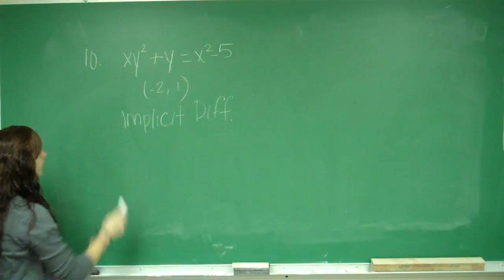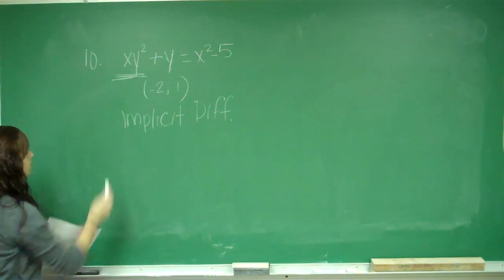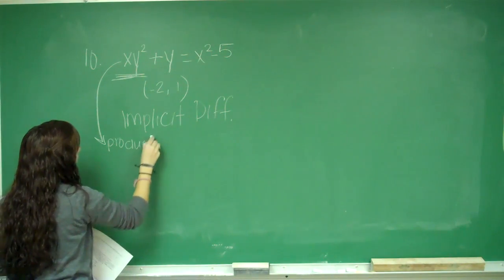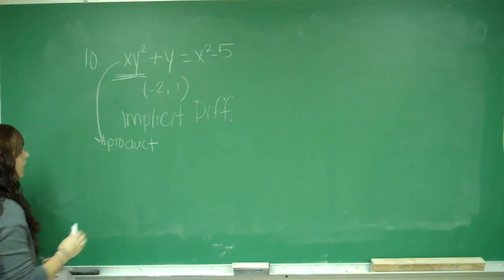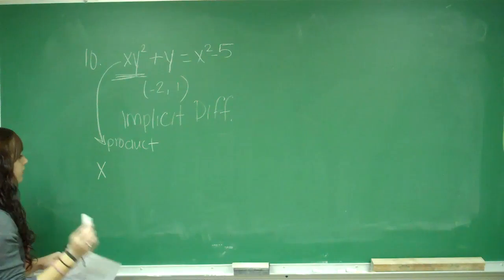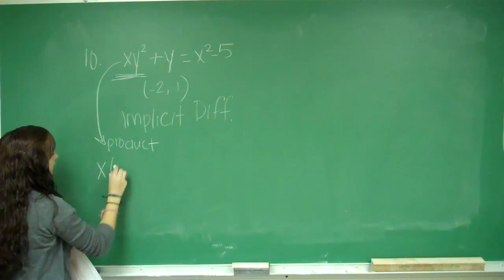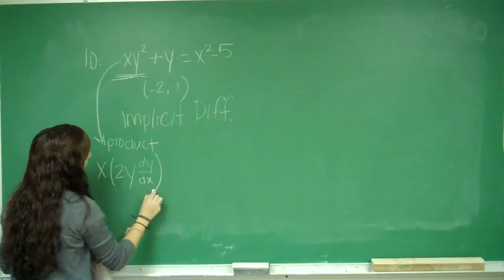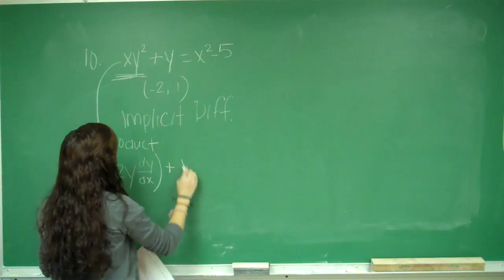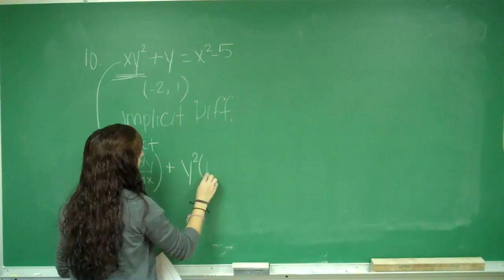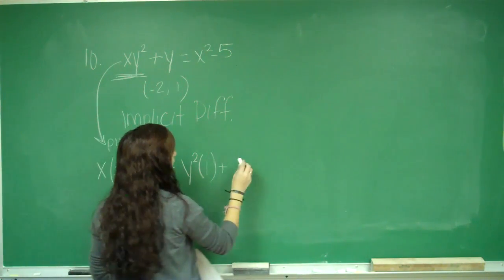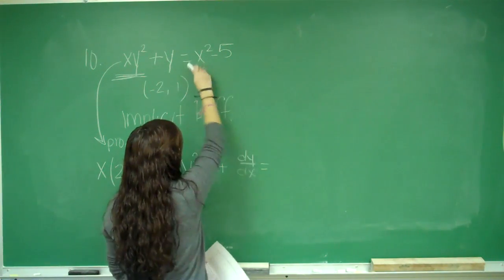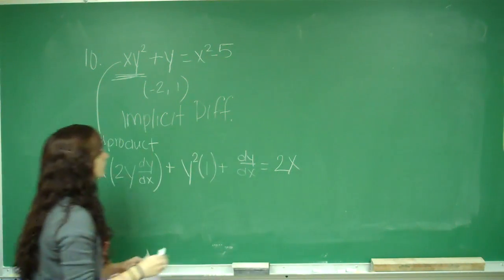So for my first term here, I have to use product rule. So I do first, which is x, times the derivative of y, which will be 2y times dy/dx, plus second, which is y², times the derivative of the first, which is 1, plus the derivative of y, which is dy/dx, equals, I do the derivative of this side, and I get 2x.